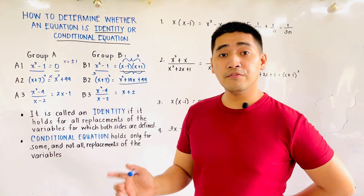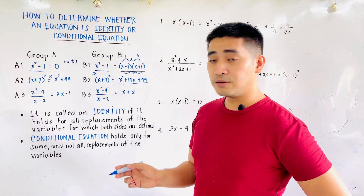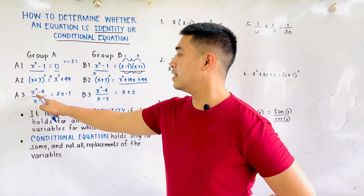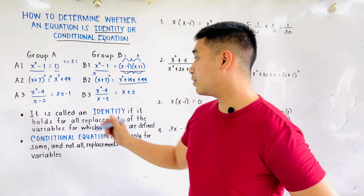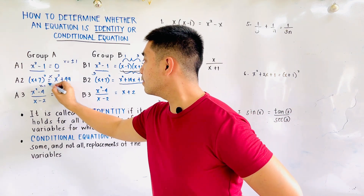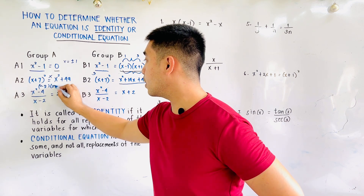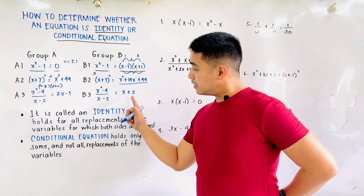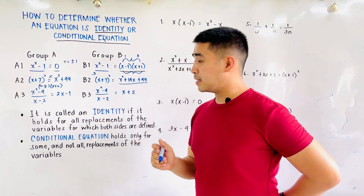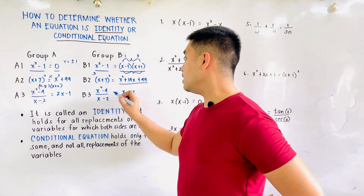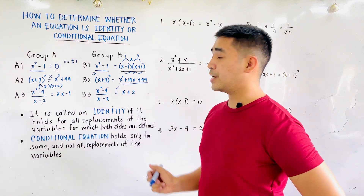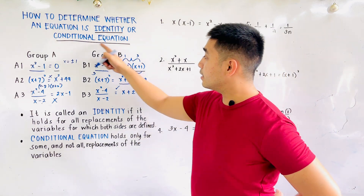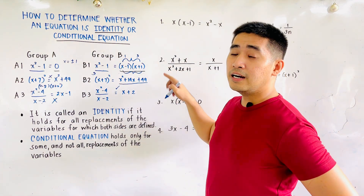For A3 and B3, we are given x squared minus 4 over x minus 2 is equal to 2x minus 1. If we simplify the left side, x squared minus 4 is difference of squares, so that factors as x minus 2 times x plus 2. Cancel out x minus 2. Therefore, the answer here must be x plus 2. Is the answer on the right side of Group B equal to x plus 2? Exactly. Therefore, Group B has equal left and right sides. However, for A3, it is not true for all the values of x.